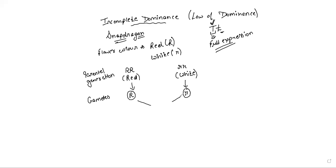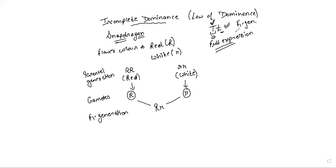These gametes are going to fuse together, and we are going to get a heterozygous situation in the F1 generation. Just like Mendel's monohybrid cross, the F1 generation was also a heterozygous situation. Here also, when considering snapdragon flowers, we get the same heterozygous situation.